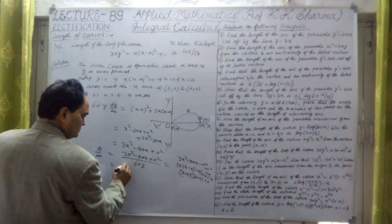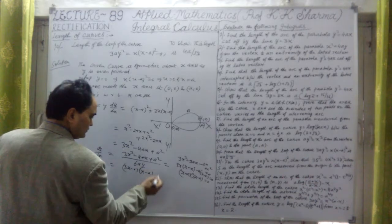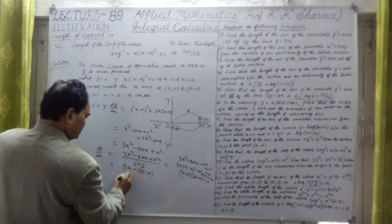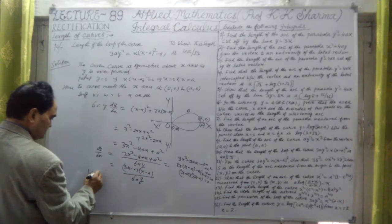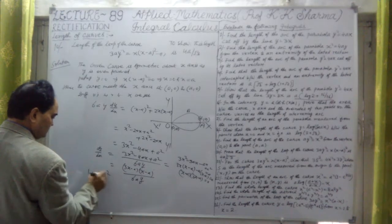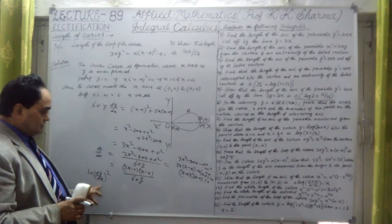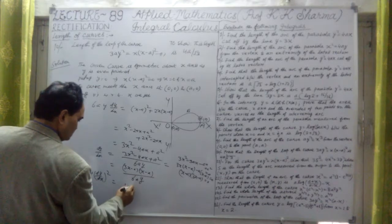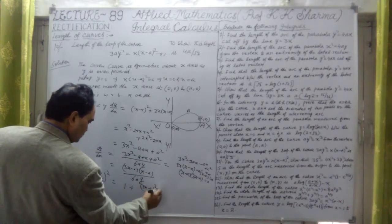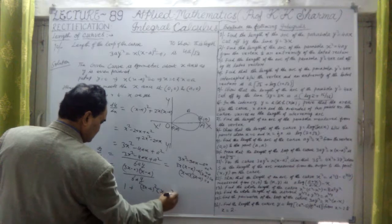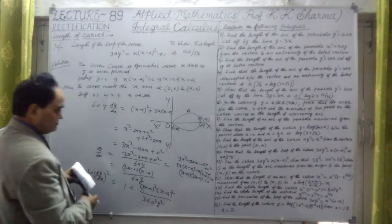Factorizing the numerator 3x² - 4ax + a²: splitting -4ax as -3ax - ax gives factors (x - a)(3x - a). So dy/dx = (3x - a)(x - a) / (6ay). Therefore (dy/dx)² = (3x - a)²(x - a)² / (36a²y²).